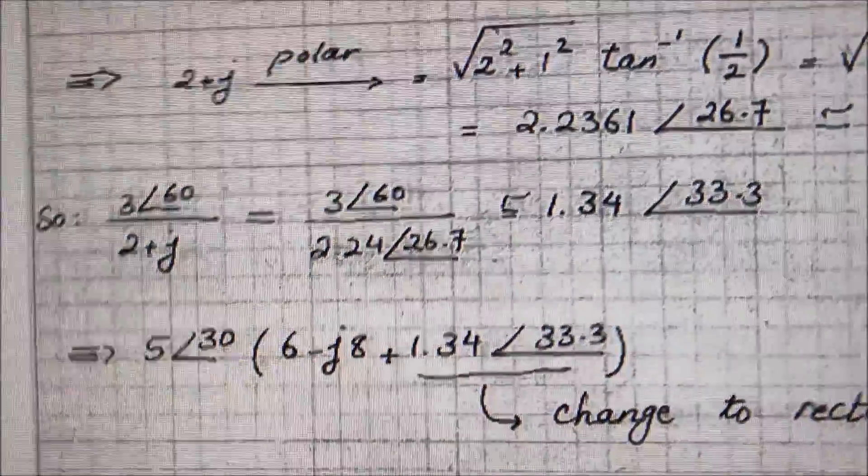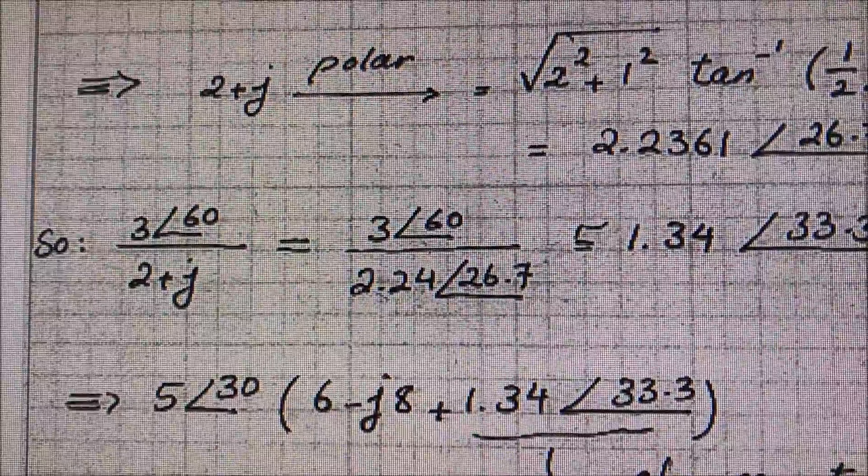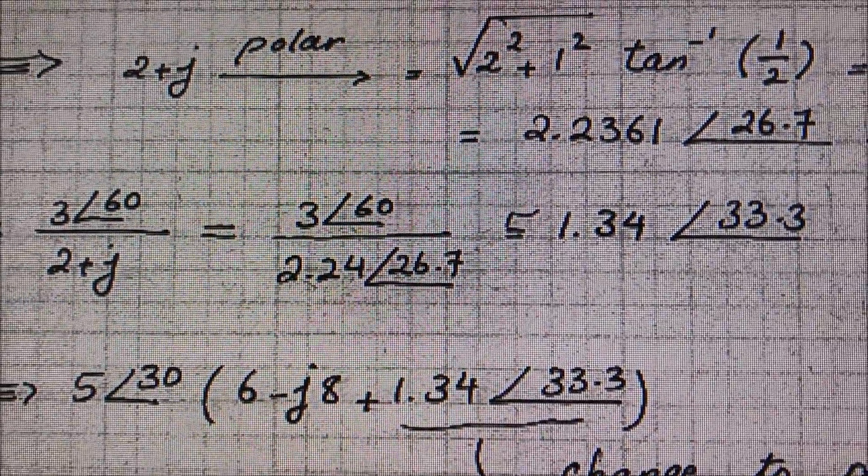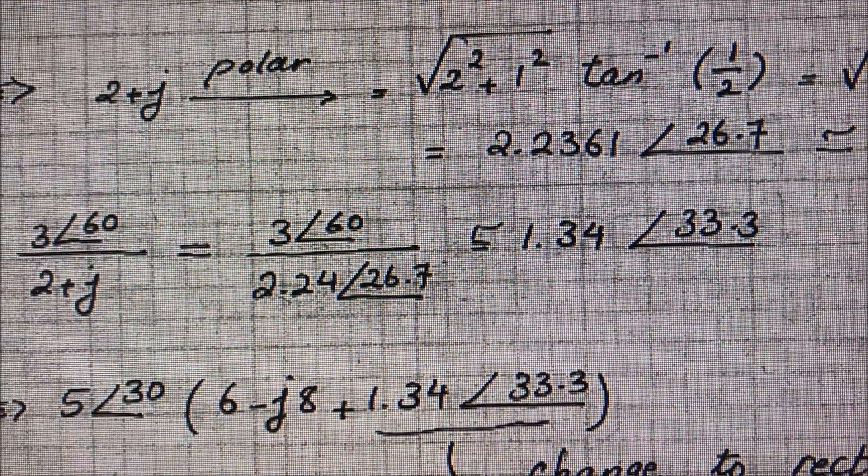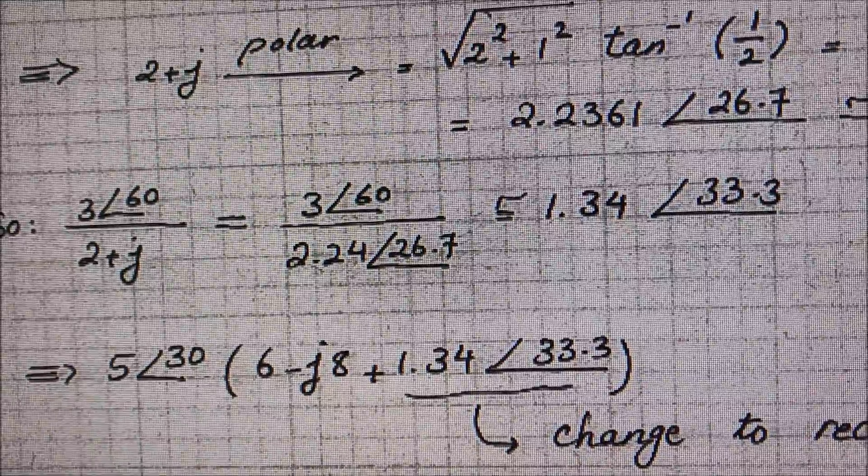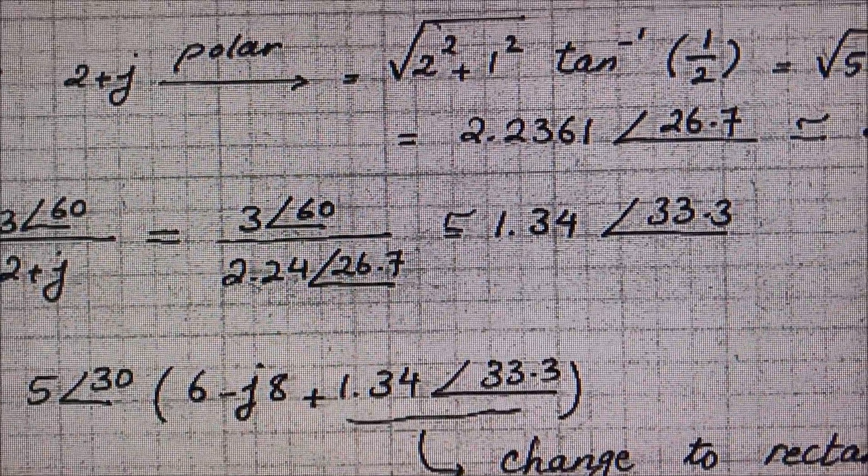So then down here, 3∠60°, once you convert that, you just divide 3 by 2.24, which gets you 1.34. And then you just subtract 60 minus 26.7, which gets you 33.3.